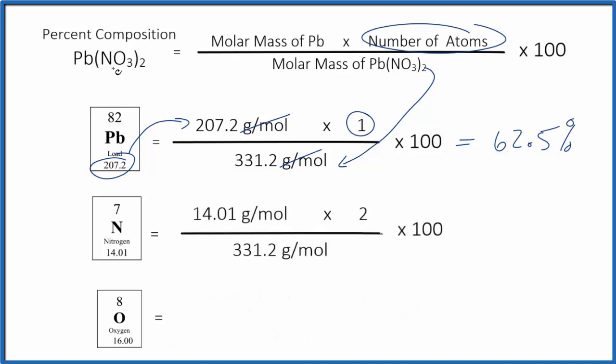For the percent of nitrogen in Pb(NO3)2, we do it the same way. The only thing to note is we have our 14.01 here. We have two of these nitrogen atoms. This 2 goes to everything in the parentheses. So 2 times the 1 times 2, we multiply,